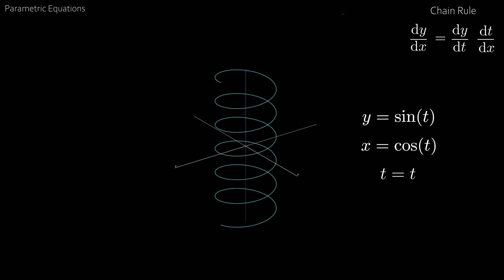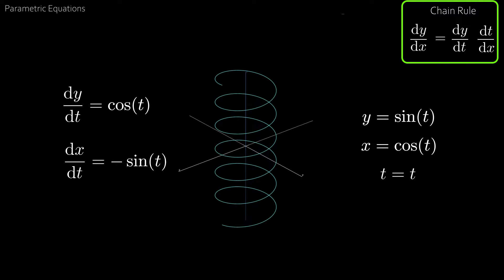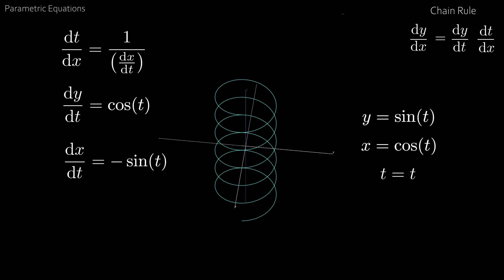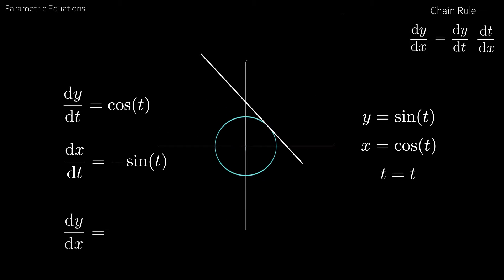Now let's actually find dy by dx. We know that dy by dt equals cosine t and dx by dt equals minus sine t. Then using the chain rule and the fact that dt by dx equals 1 over dx by dt, we have dy by dx equals cosine t divided by minus sine t, which substituting back in equals minus x over y, which in turn equals minus x over the square root of 1 minus x squared. And this is our derivative.